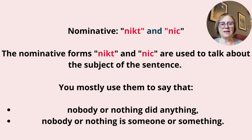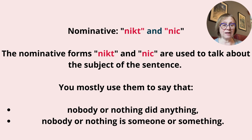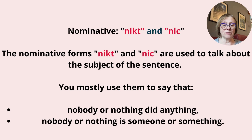Nominative: Nikt and Nic. The nominative forms Nikt and Nic are used to talk about the subject of the sentence. You mostly use them to say that nobody or nothing did anything, or that nobody or nothing is someone or something.